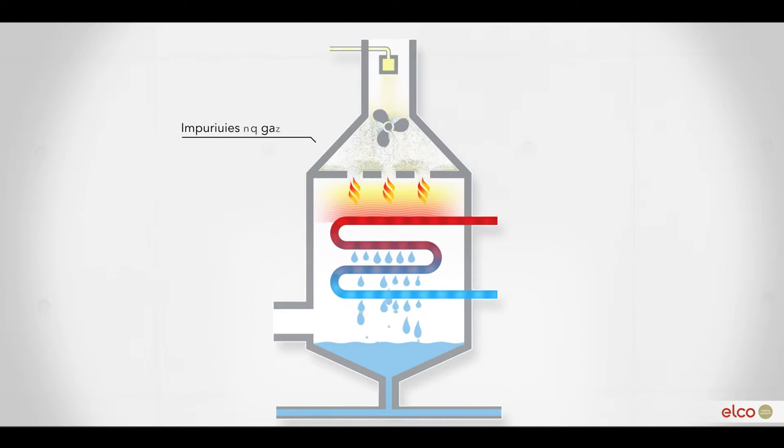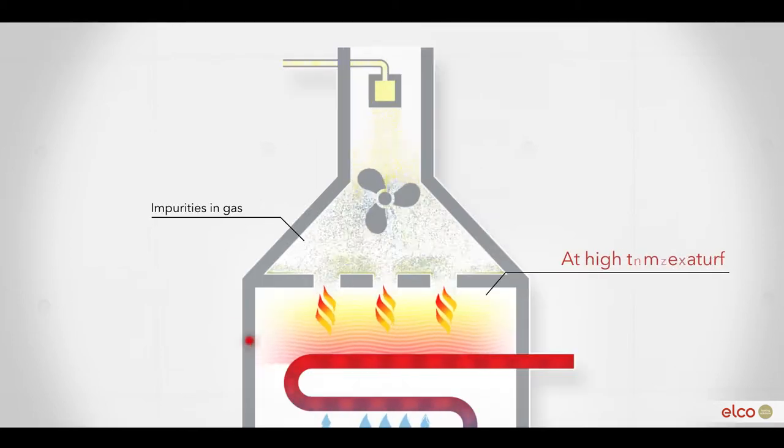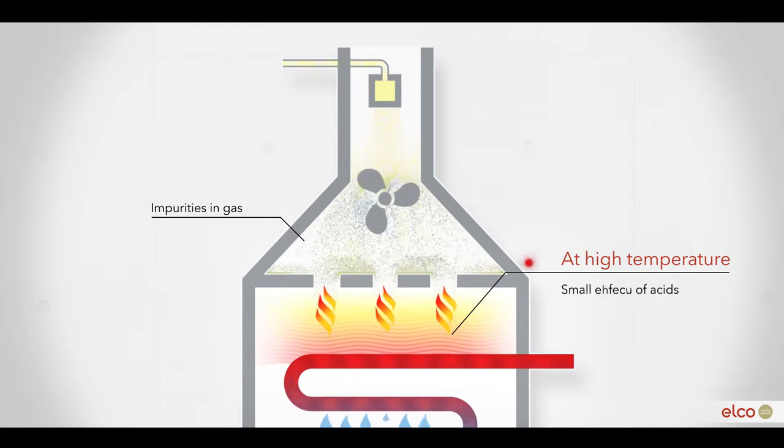During the combustion of gas and air, impurities in the gas form acids. In the high temperature part of the boiler, where we only have hot flue gases, the effect of these acids is very small.